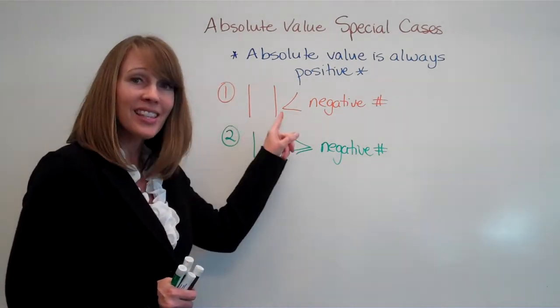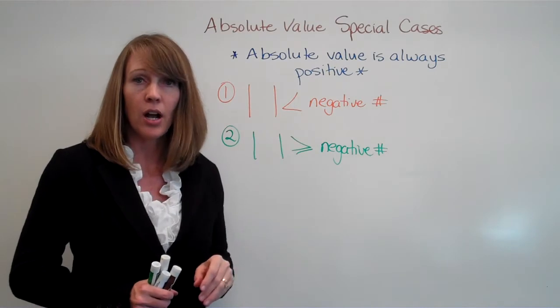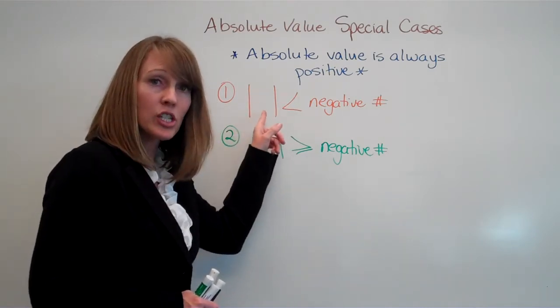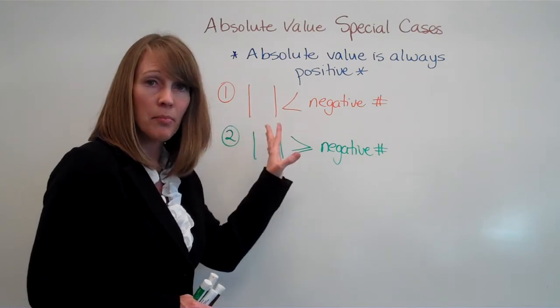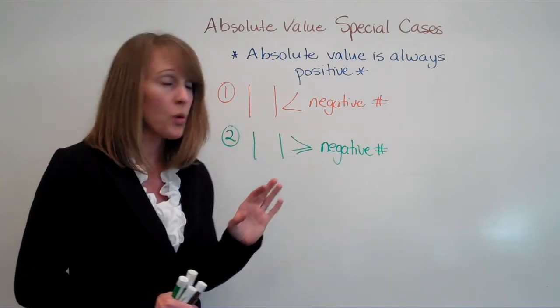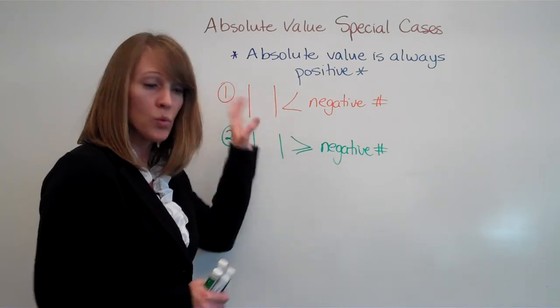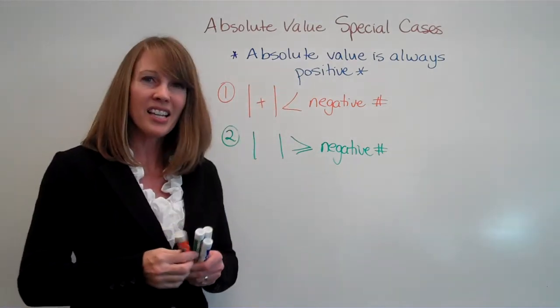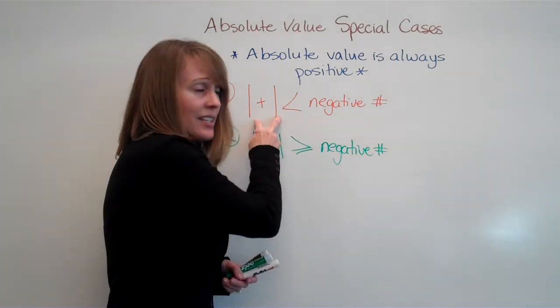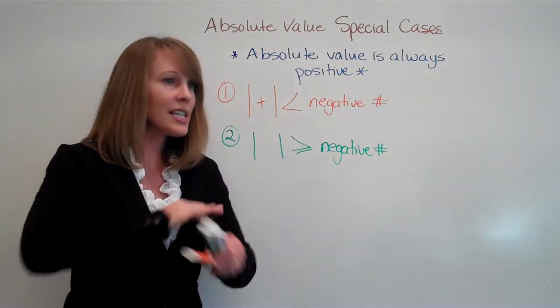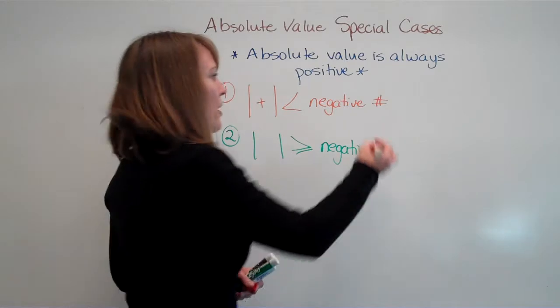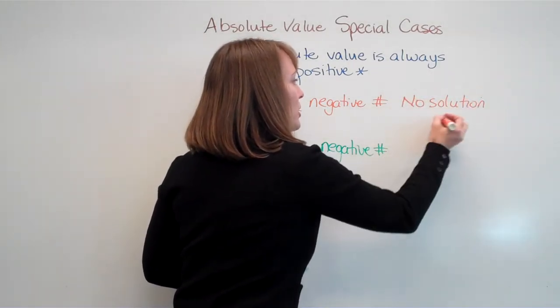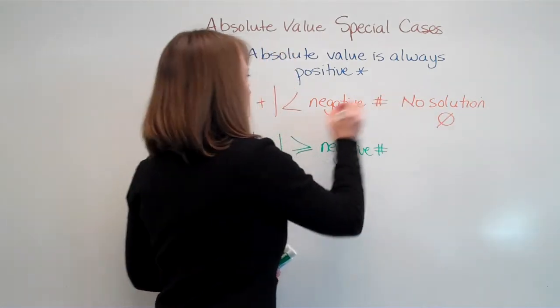First, if an absolute value is less than a negative number. Let's think of this logically. No matter what I put in here, it's going to result in a positive number. No matter how complicated the equation, ultimately when I take the absolute value, this will be positive. And that means a positive number could never be less than a negative number. So this is no solution, this is not possible. We can also use our little symbol for no solution.